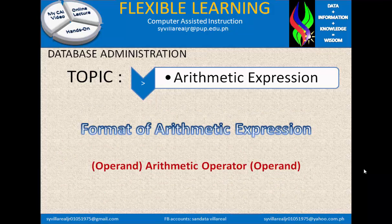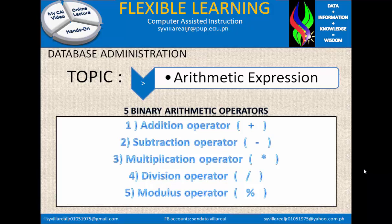Next, the format of arithmetic expression. The format is very simple: operand, followed by the arithmetic operator, followed by another operand. Arithmetic operators have binary usage. The first is addition, the second is subtraction, the third is multiplication, the fourth is division, and the last is modulus. You will notice they use symbols like plus, minus, asterisk, slash, and percent.